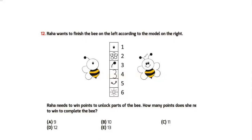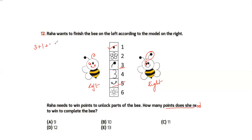Question number 12: Raha wants to finish the bee on the left according to the model on the right. She needs to win points to unlock parts of the bee. What is missing: this part costs 3, one more 'i' costs 1, the smile costs 5, and the wing costs 4. Adding up: 3 plus 1 is 4, plus 5 is 9, plus 4 is 13. My answer is option E, which is 13.